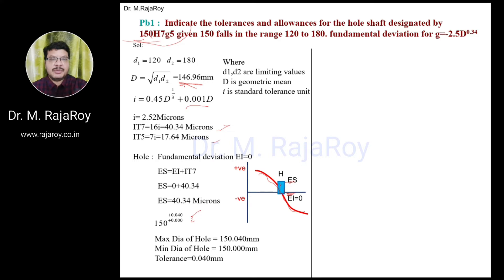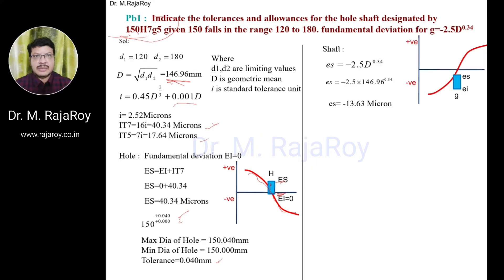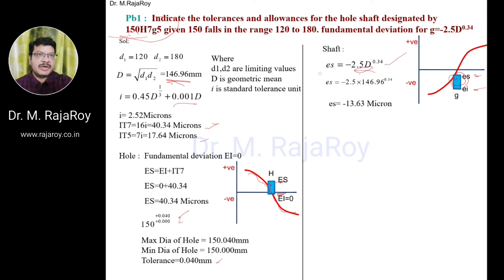The difference between maximum hole and minimum hole is the tolerance for the hole. For the shaft, the tolerance is indicated with G5. Observing the graphical representation of G5, both ES and EI are in the negative zone. That is why ES equals minus 2.5 times D to the power of something — this becomes ES, which is the fundamental deviation for the shaft.